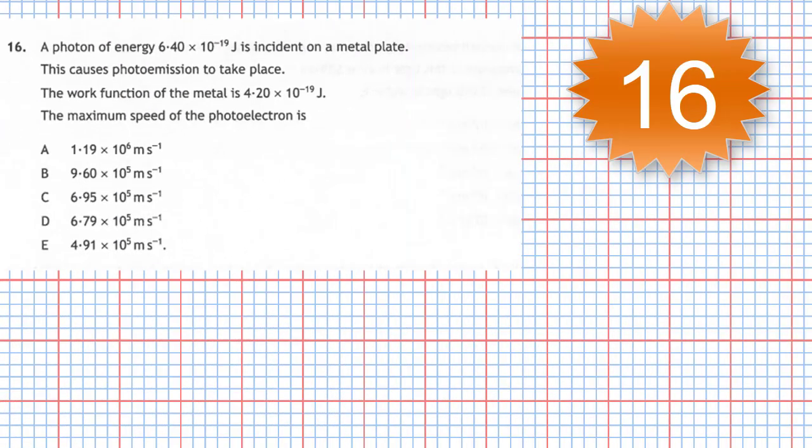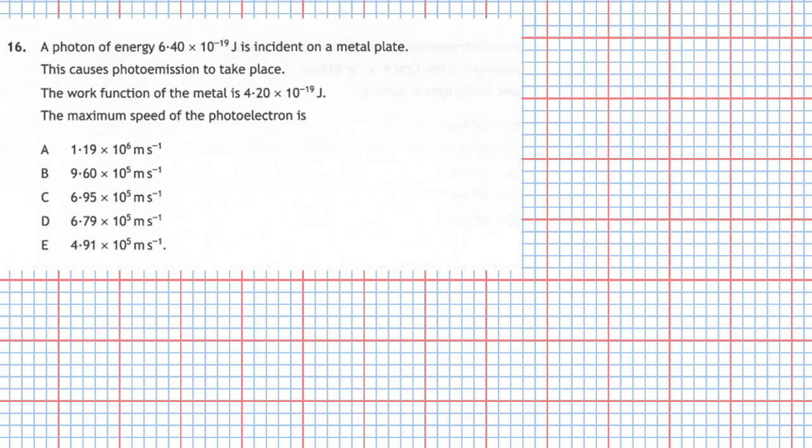Question 16 from section 1 of the 2019 Higher Physics Examination. A photon of energy 6.40 times 10 to minus 19 joules is incident on a metal plate. This causes photo emission to take place. The work function of the metal is 4.20 times 10 to minus 19 joules. The maximum speed of the photoelectron is, and you are given five choices.